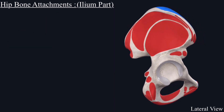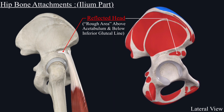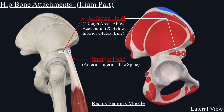Below the inferior gluteal line and above the acetabulum is a rough area from which originates the reflected head of the rectus femoris muscle. Slightly inferior to it is the anterior inferior iliac spine, from which originates the straight head of the rectus femoris muscle.